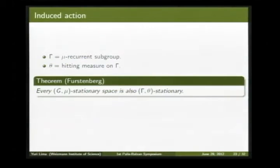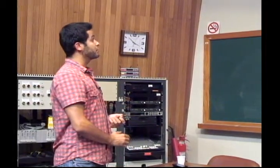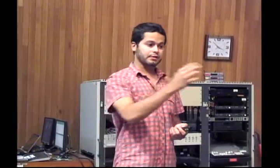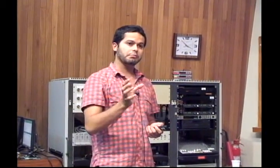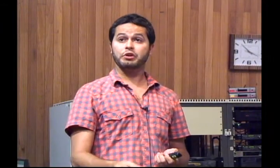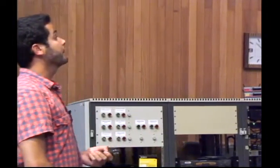A theorem guarantees this is the right measure to consider. Whenever you have a stationary space and consider the action of the subgroup Γ equipped with the hitting measure β, then the stationary space is also stationary with respect to the induced action. This is exactly the same as in the classical setup: whenever you consider a measure-preserving system and induce, it is again measure-preserving. Here, whenever you consider a stationary space, the induced one is again stationary.